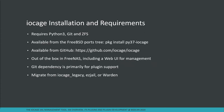Installation requirements: IOCAGE being written in Python does require Python, Git, and ZFS — you just need an available ZFS pool. You can grab it easily from the FreeBSD ports tree with a simple package install. It's also available on GitHub, and built into FreeNAS with a web UI. The Git dependency is primarily for the plugin system. There are migration scripts if you're running IOCAGE Legacy, IOCell, EasyJail, or even Warden — just install, run the script, and you're off to the races.